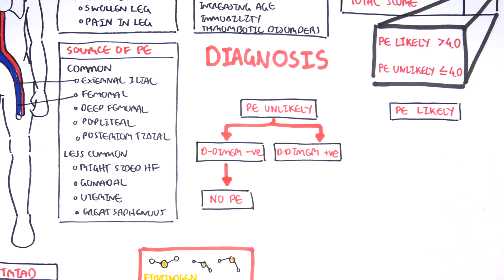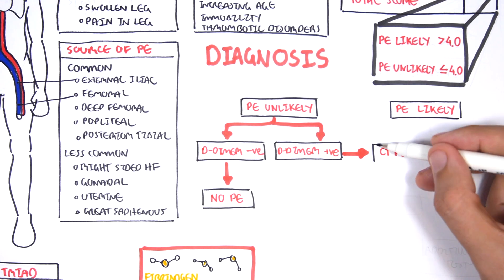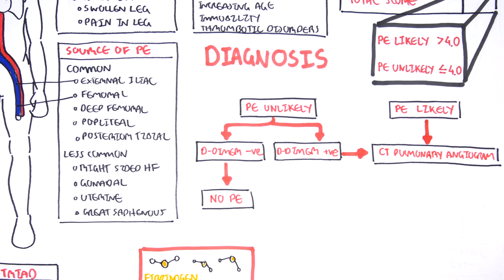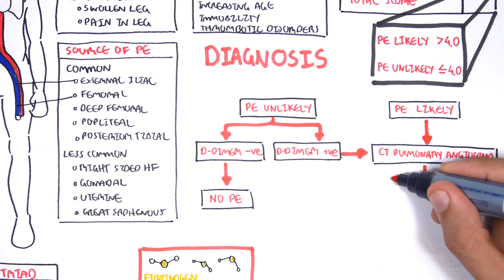However, if pulmonary embolism is unlikely and you get a positive D-dimer assay, you have to do further investigations which is the CT pulmonary angiogram. Similarly, if pulmonary embolism was already likely, you go straight to CT pulmonary angiogram.